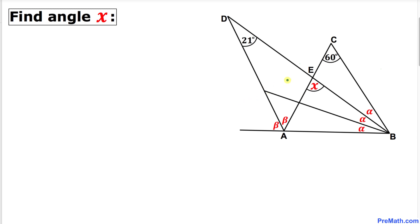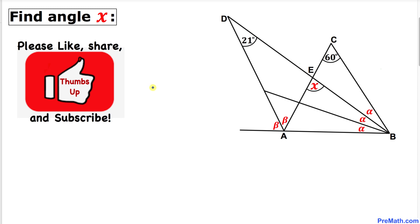Welcome to pre-math. In this video tutorial we have got this compound diagram such that all three angles alpha are congruent to each other, and moreover these angles beta are congruent to each other as well. Angle D is 21 degrees and angle C is 60 degrees, and now we are going to calculate the value of angle x.